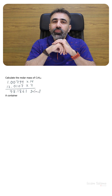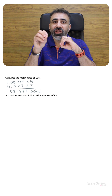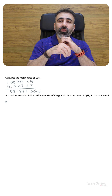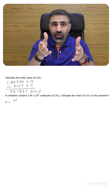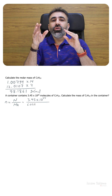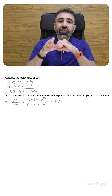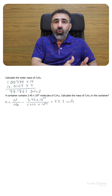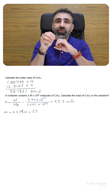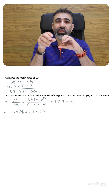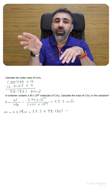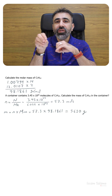A container contains 3.45 times 10 to the power 25 molecules of C7H14. We need to calculate the mass. First we find the number of moles by dividing the number of molecules, 3.45 times 10 to the power 25, by Avogadro's number, 6.022 times 10 to the power 23. We get 57.3 moles. Then mass equals number of moles multiplied by molar mass: 57.3 times 98.1861, giving 5630 grams of C7H14.